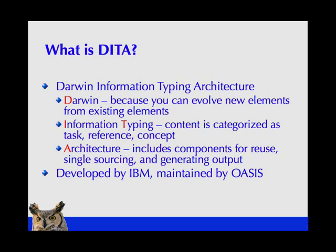It has the word Darwin in it because you can evolve. You can create new elements from the elements that are provided in DITA. As we'll see later, this becomes a very powerful way of managing your information and managing the specific organization that you need for your content. Darwin Information Typing Architecture, as opposed to, for example, Structure or XML Standard, because it's not just a structure — not just a collection of elements or components. It has features in it that help you do things like reuse, single sourcing, and generating output, giving you an overall organizational scheme for creating content.